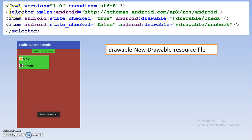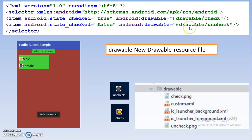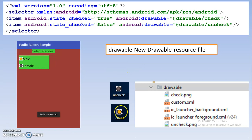After doing this, some code will be generated and you have to add an item with state_checked true. It means if the radio button is selected or true, the checked image will be loaded. Otherwise if it is false, the unchecked image will be loaded. I have already taken a screenshot — this is the check and uncheck image.